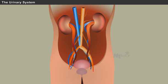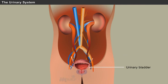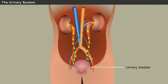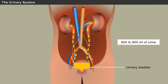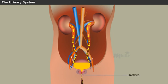The urinary bladder, a triangle-shaped hollow organ, is located in the lower abdomen. It is held in place by ligaments attached to other organs and the pelvic bones, and is connected to the kidneys by the ureters. The walls of the bladder allow it to stretch to hold anywhere from 600 to 800 milliliters of urine.